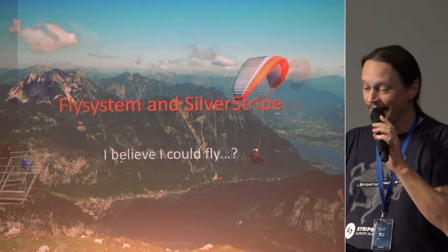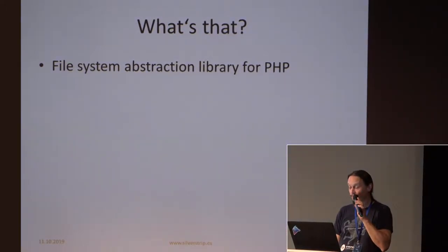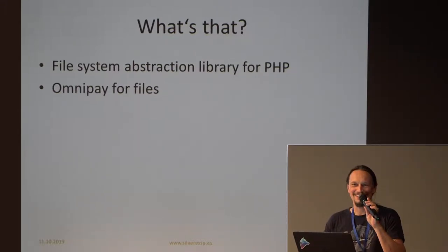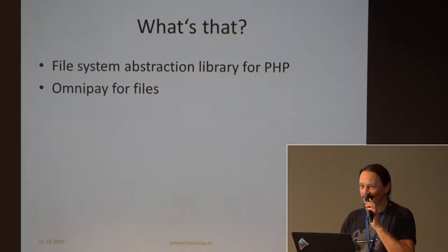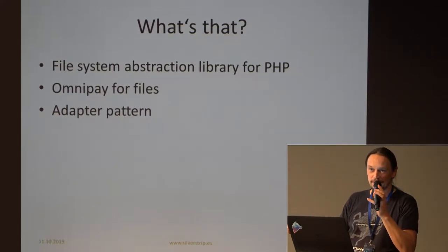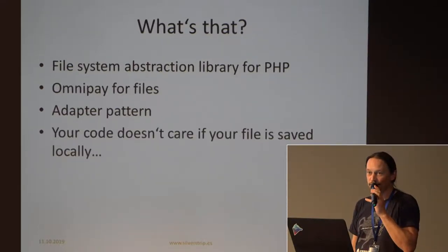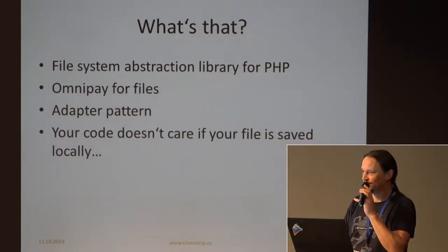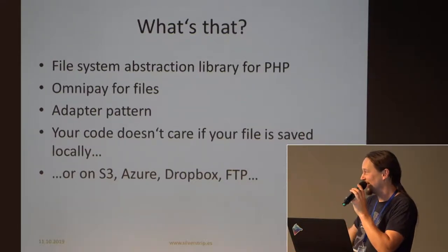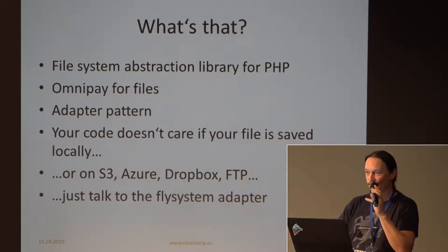Flysystem — what's that? It's a file system abstraction library for PHP. I googled it. It's something like OmniPay for files but a little bit easier — an abstraction layer. It uses the adapter pattern, so you need adapters that actually talk to the file system you want to save to, and your code doesn't have to care where your file is saved — locally, on S3, Azure, Dropbox, FTP, Cloudinary, whatever.